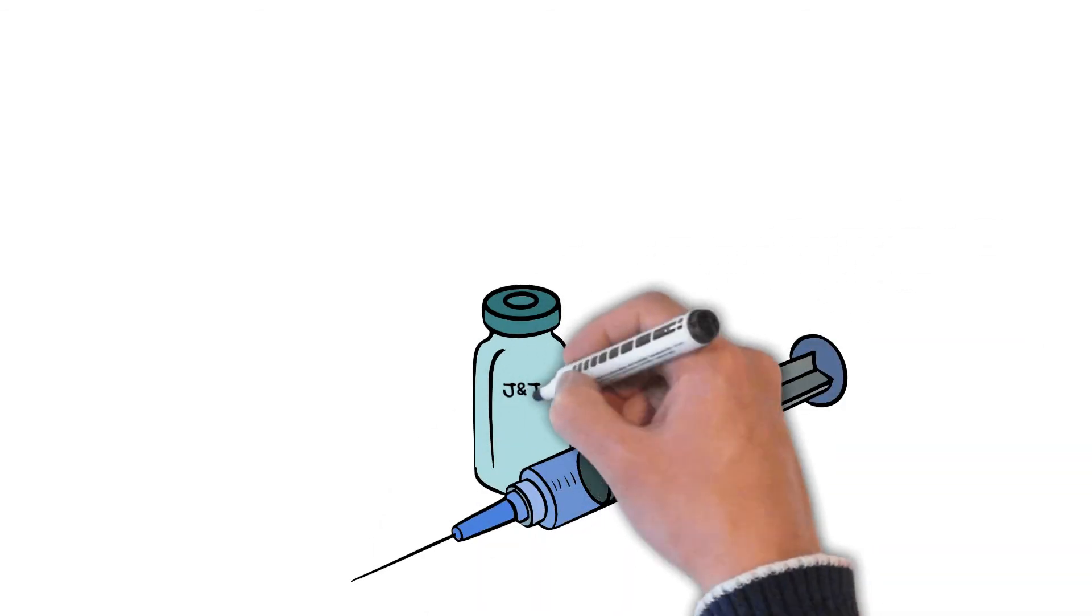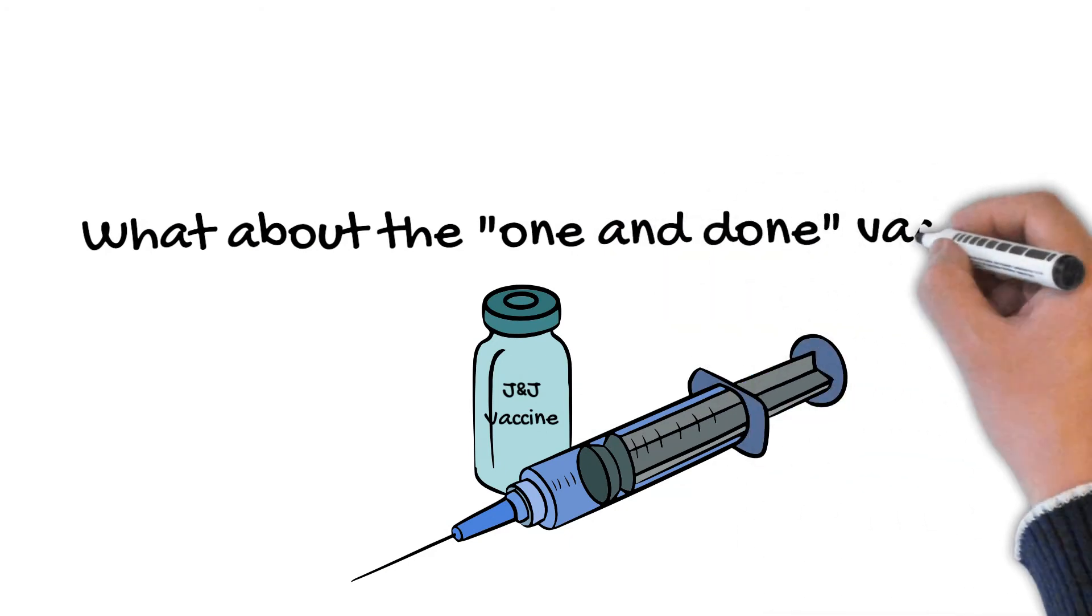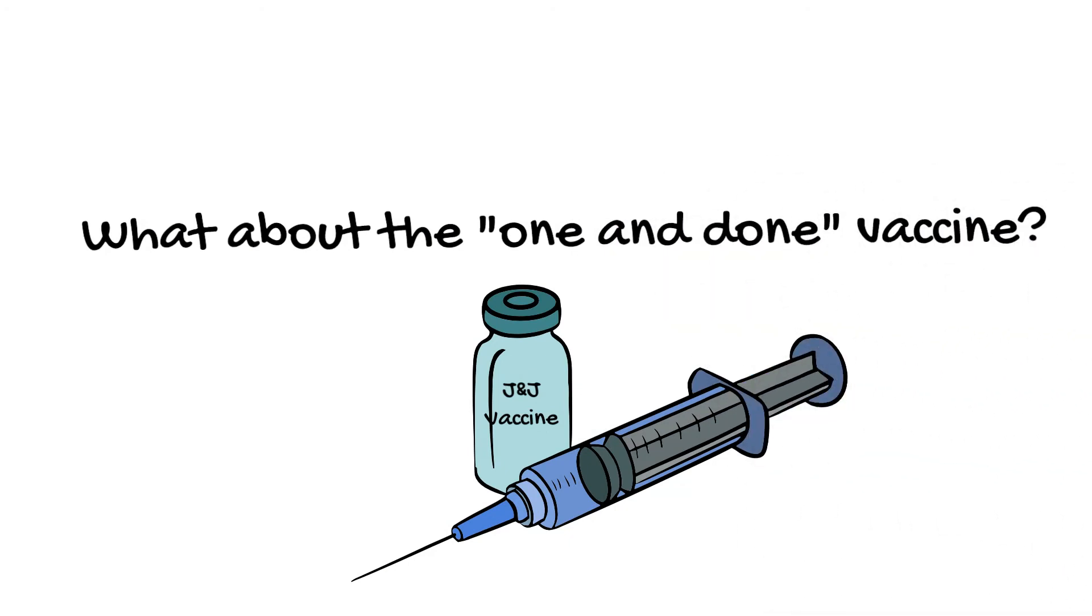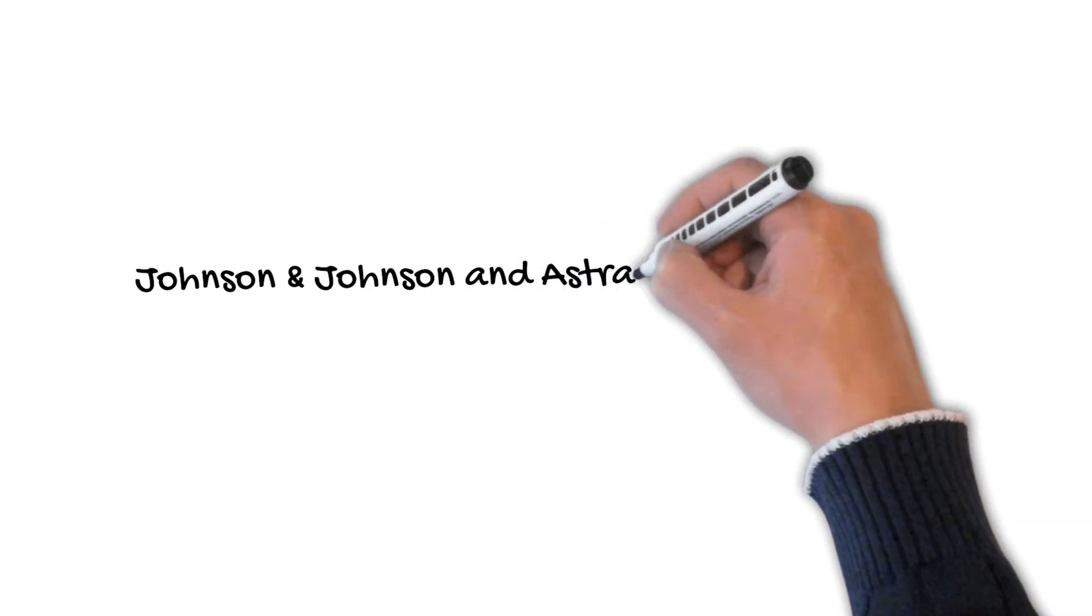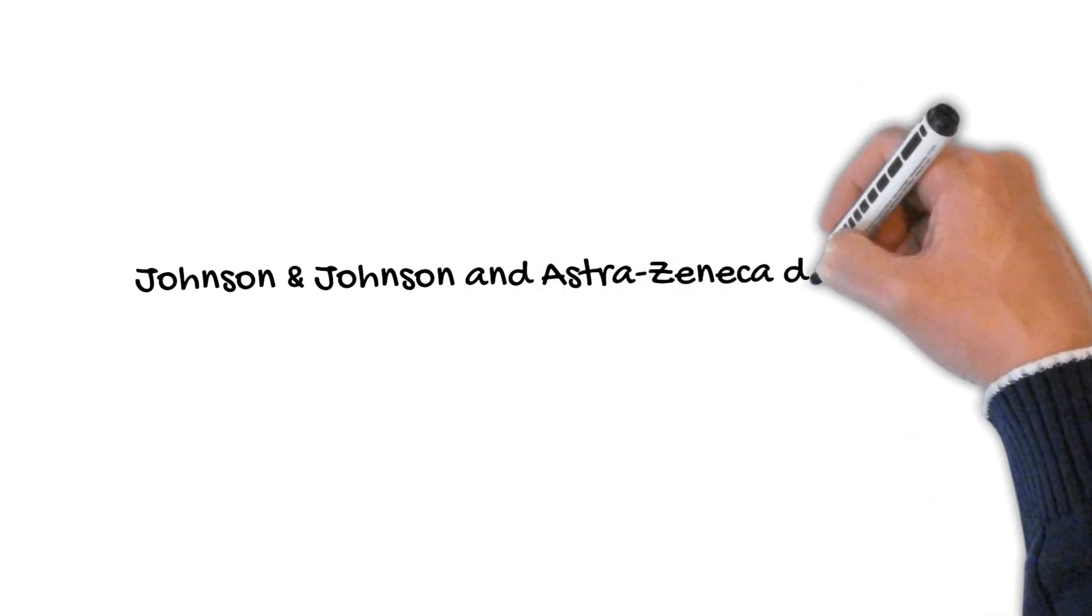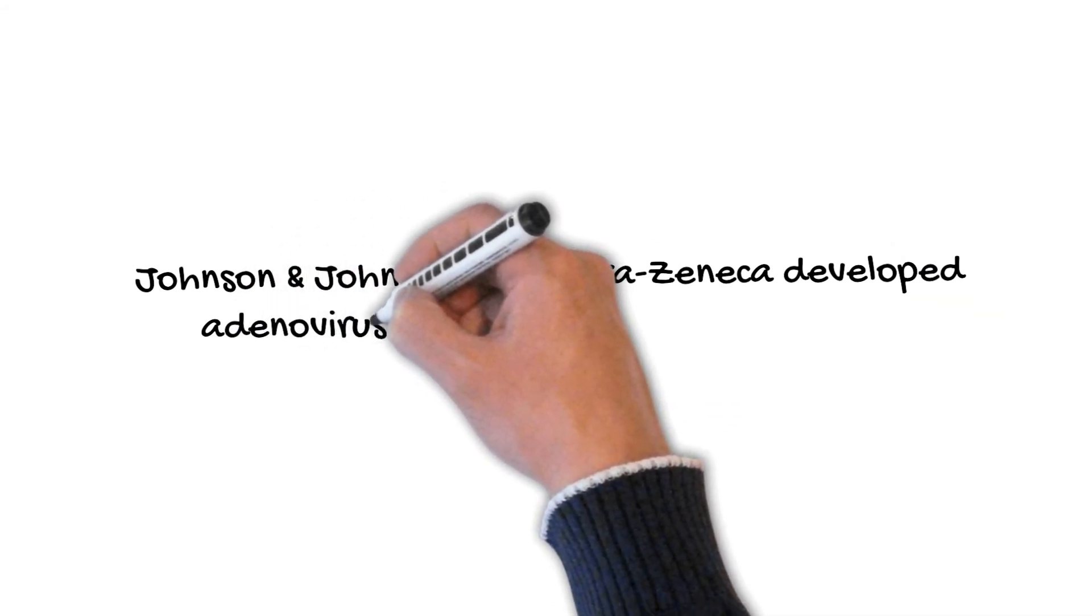But, now, what about the vaccine that was developed that only required one immunization? What's different about that vaccine? Well, Johnson & Johnson, as well as AstraZeneca, developed what are called adenovirus vaccines. They're also sometimes called vector vaccines.